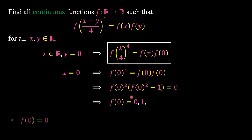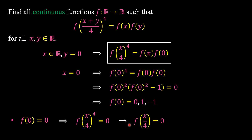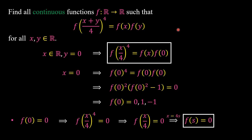In the case f(0) equals 0, substituting this value into the functional equation gives f(x/4) to the power of 4 equal to 0, which is equivalent to f(x/4) equal to 0 for any real number x. Substituting x equal to 4s, we get f(x) equals 0 for any real number x. Of course, f(x) = 0 is a trivial solution to the functional equation.